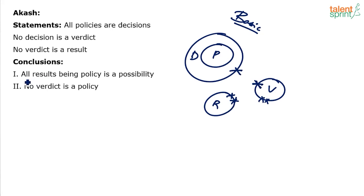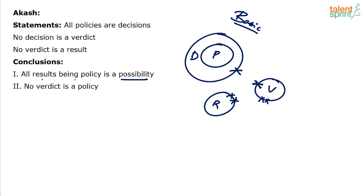Now look at the conclusions. Number one: all results being policy is a possibility. This is a possibility-type conclusion. What happens with possible conclusions? It need not follow all diagrams — it should follow at least one diagram for it to be true. So, can all results be policies? Yes, it can.